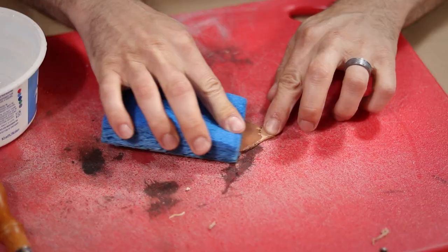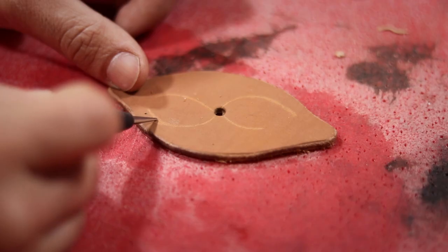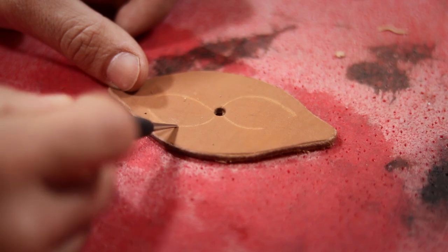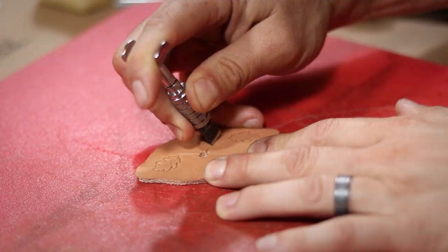Now that I have a good center mark, I wet down my leather and used a stylus to make the general shape of my design. Then I stamped in some oak leaves and cut in the branches with my swivel knife.